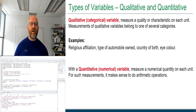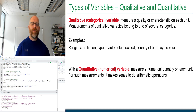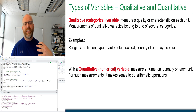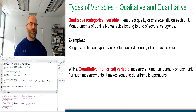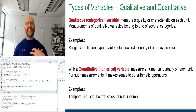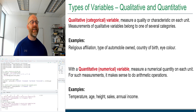Quantitative, or numerical, variables measure a numerical quantity on each unit, and it makes sense to perform arithmetic operations like addition and multiplication. Examples include temperature, age, height, and annual income.